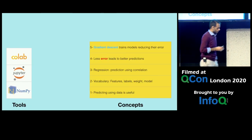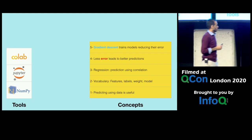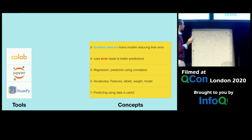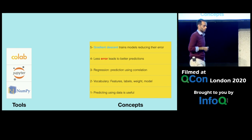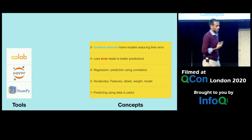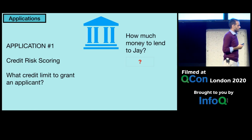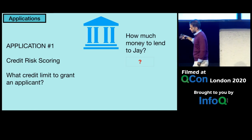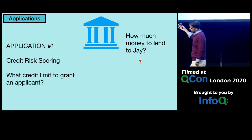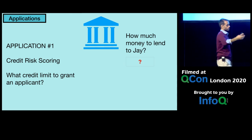Let's look back at where we've come. We have five concepts, three main tools, and we have not yet talked about applications. When looking for things that are going to have value in commerce — things that will have value for your company and your job — we'll talk about four applications. The first one is credit risk scoring.